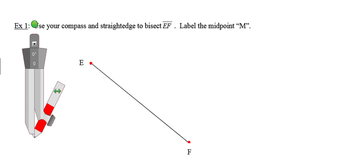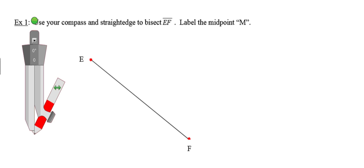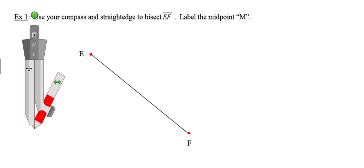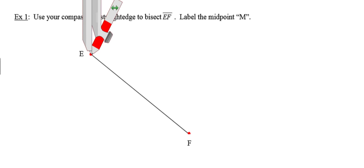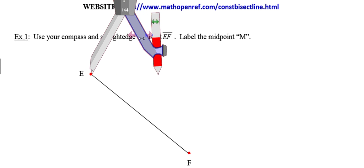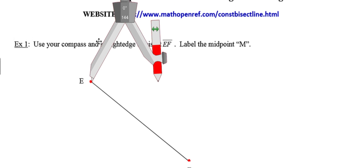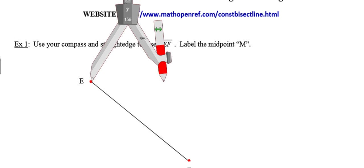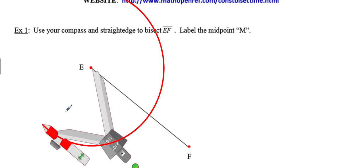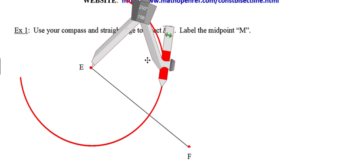I'm going to start by bisecting line segment EF. I'll put a little endpoint at both ends of the line segment — you can see where I've done that in red. I'm going to place the point of my compass at endpoint E and open up my compass setting so that it's a little bit greater than half the length of segment EF. It just has to be more than one half the length. Then I'm going to draw a nice big arc — almost a semicircle.